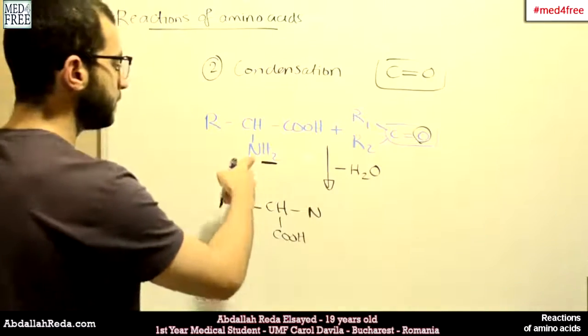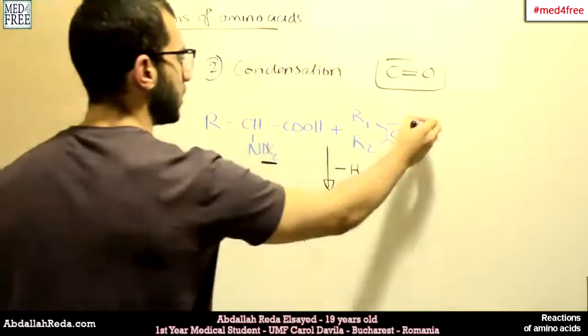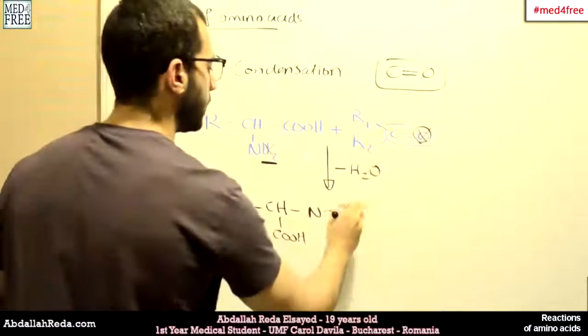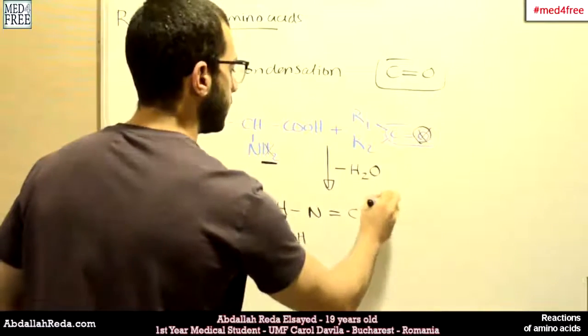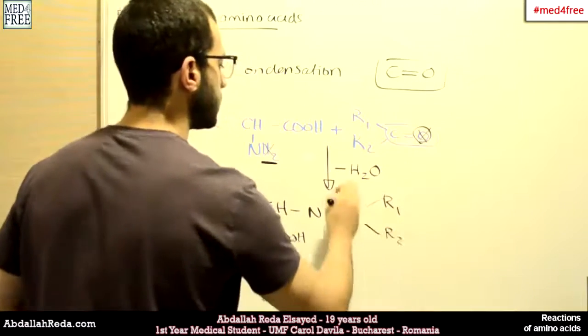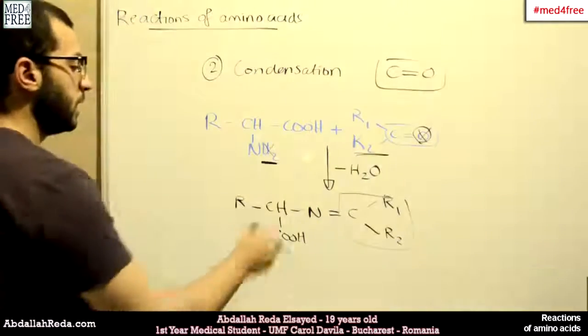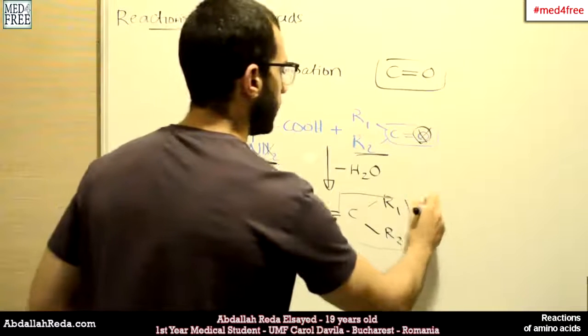This is the N here. And this is lost. Then we will have the double bond C. And this is the rest of the molecule, which we can see here. This is called a Schiff base.